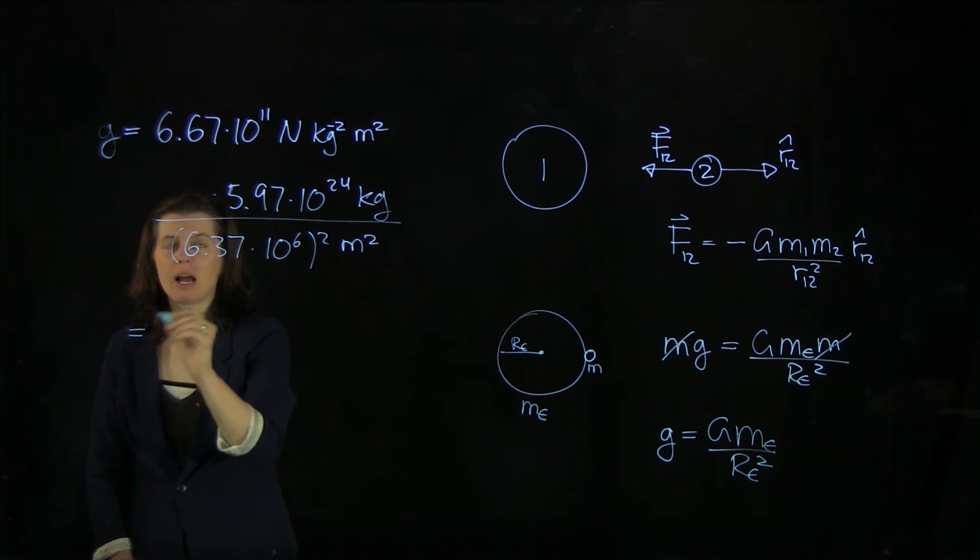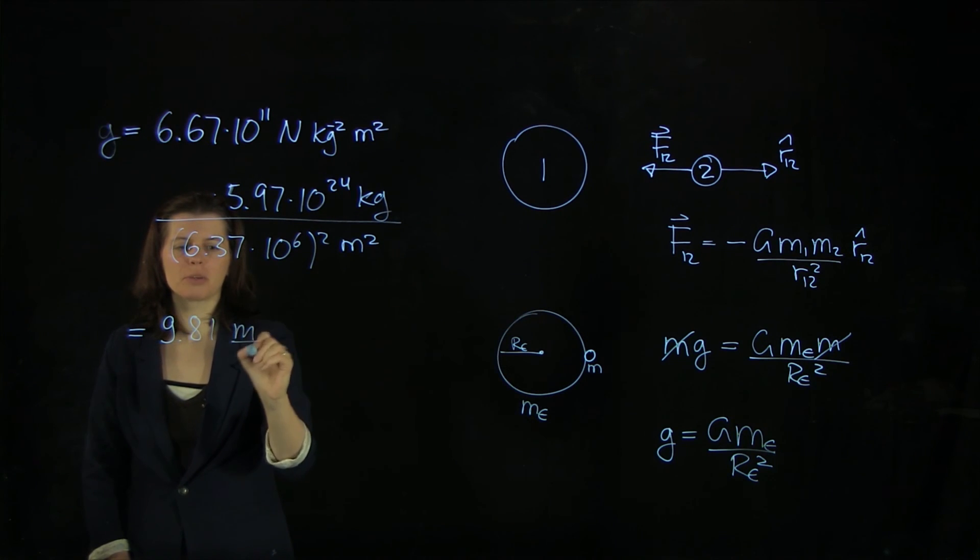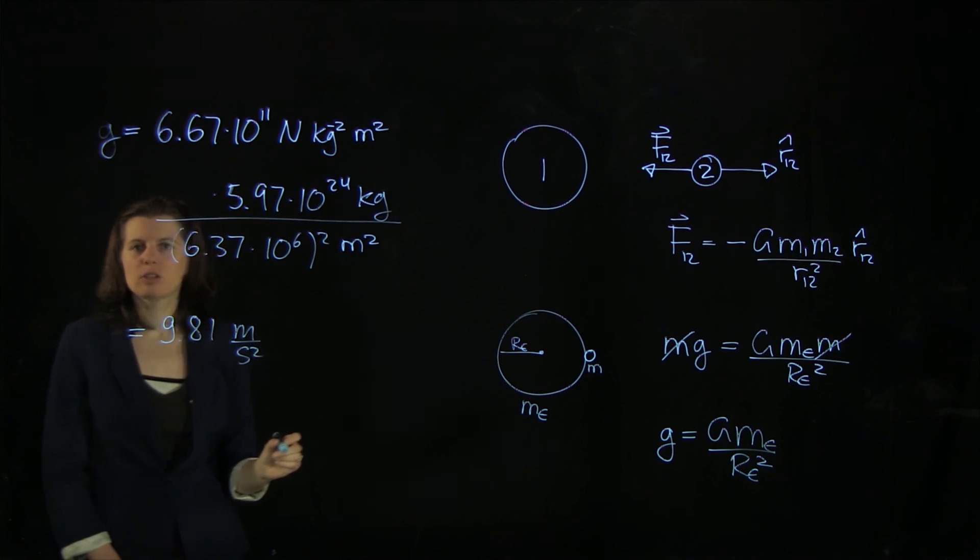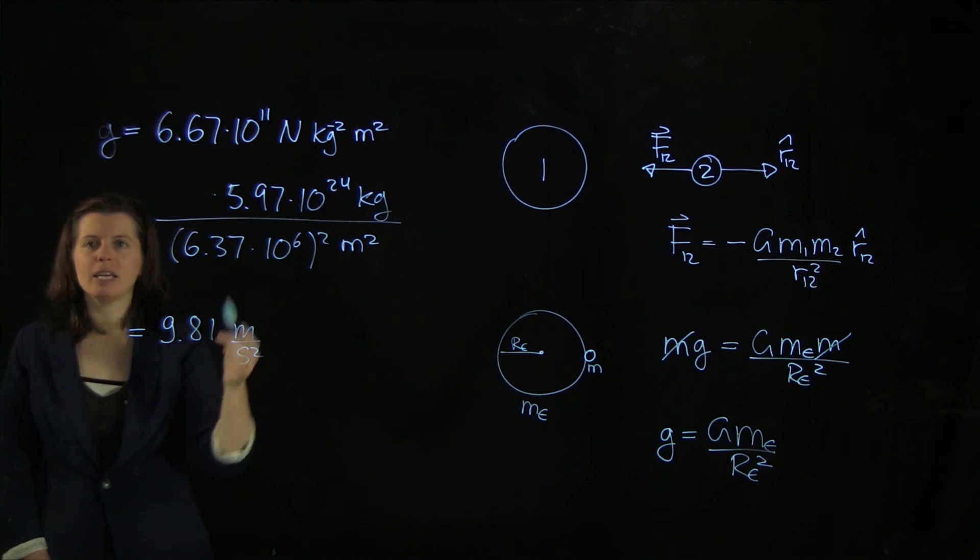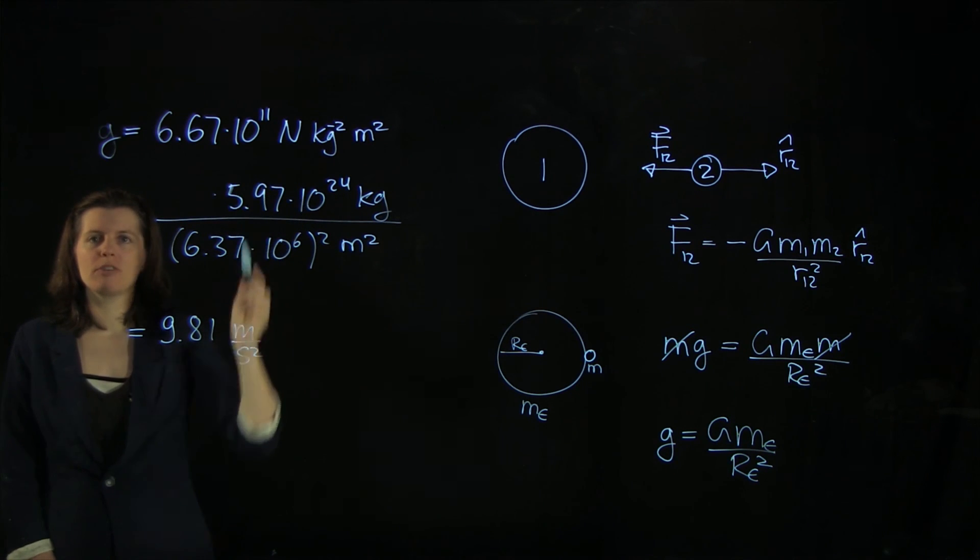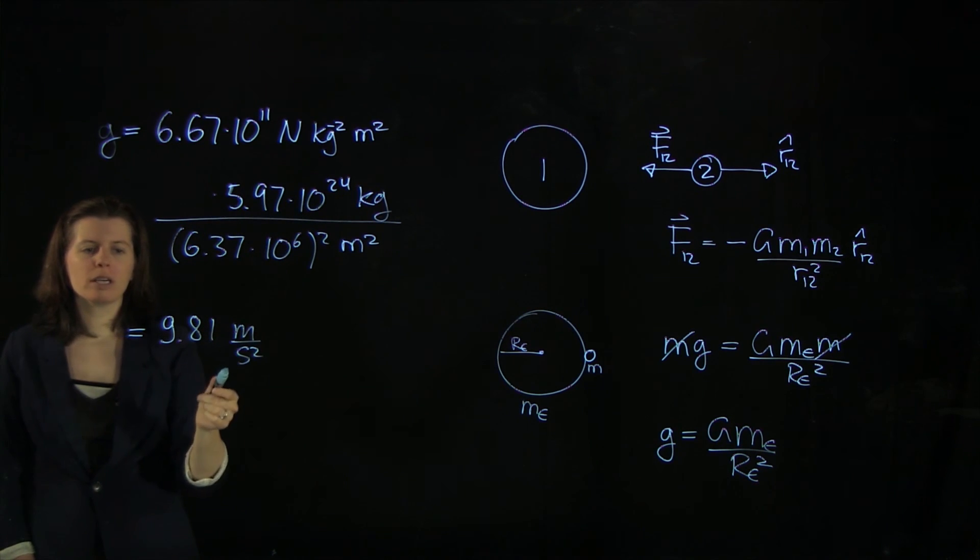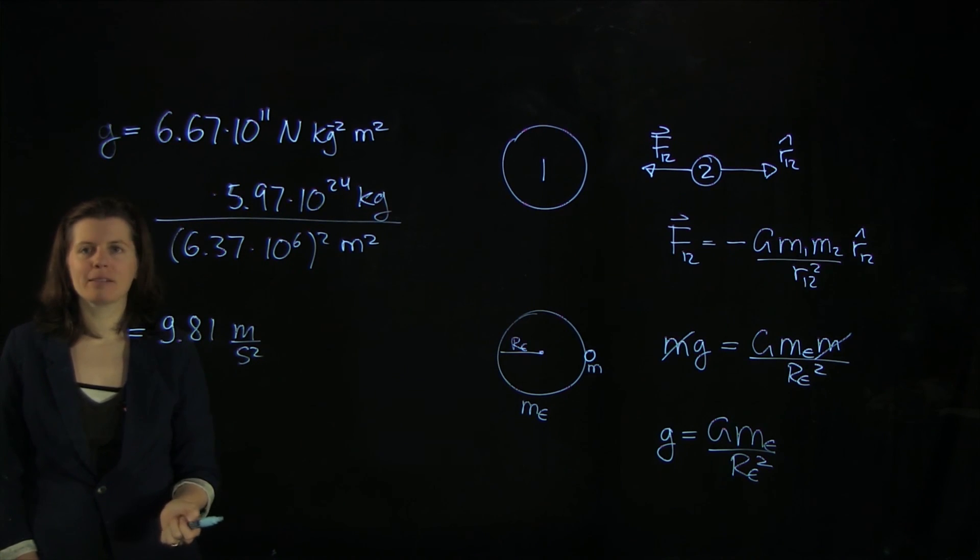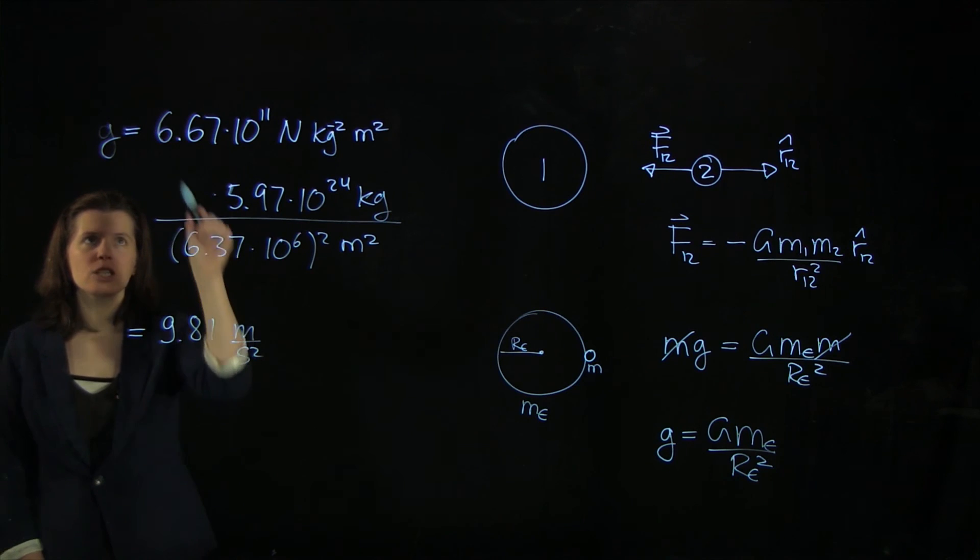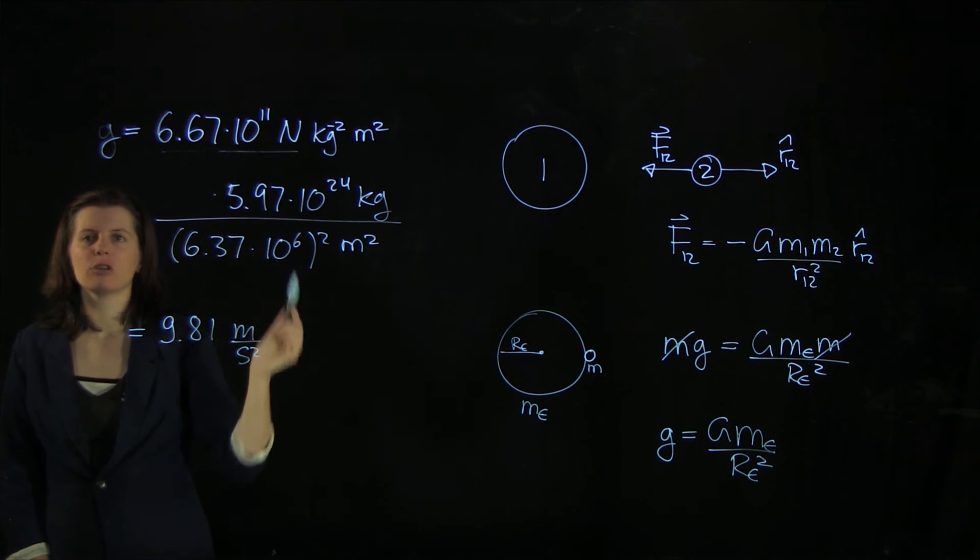If we calculate this, we get to 9.81 meters per second squared. And surely, you have seen this number before. This number can either be calculated if you know capital G, the gravitational constant, or you can determine the gravitational acceleration through an experiment. And together with the Earth mass and the Earth radius, you can actually calculate the gravitational constant there.